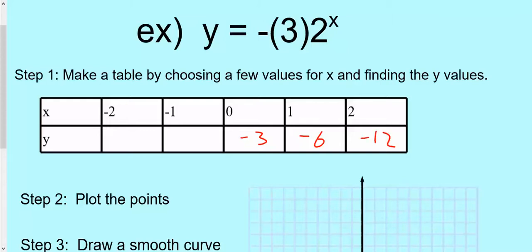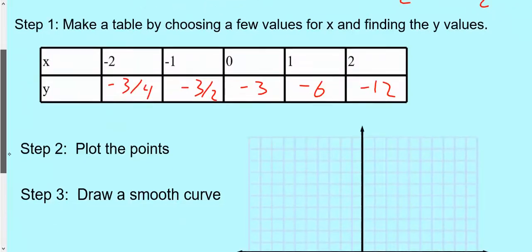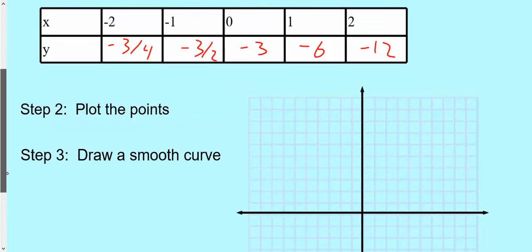And then negative 3 over 2 to the 1st is negative 3 halves. And then negative 3 over 2 squared, because if I plug in negative 2, I move it to the bottom, is negative 3 fourths. So you're really applying a lot of the stuff that we learned in 8.3.